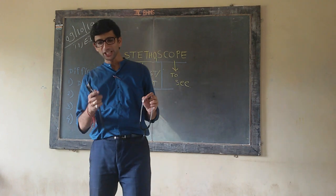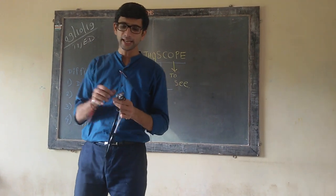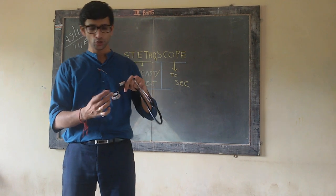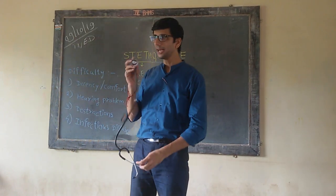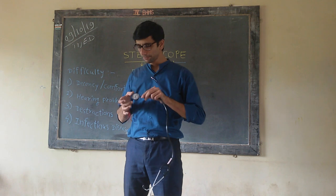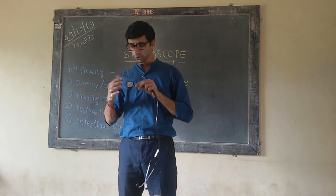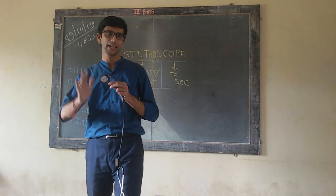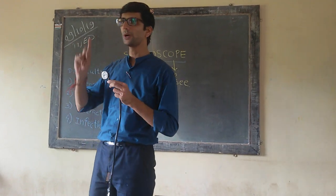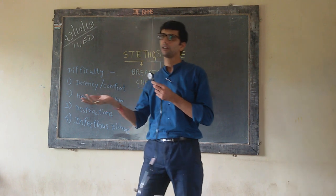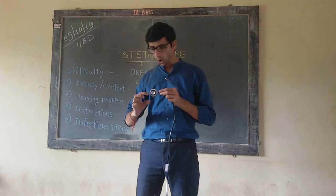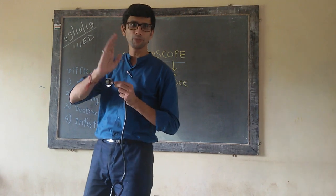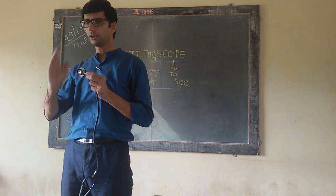Coming to the chest piece, it has two surfaces — one bigger and one smaller. The smaller one is known as the bell, and the bigger one is known as the diaphragm. The diaphragm is generally used to measure sounds above 300 hertz, like S1, S2, and various murmurs.